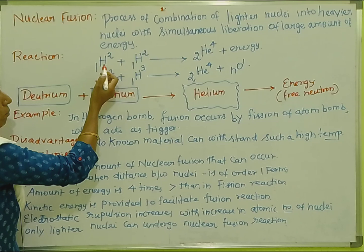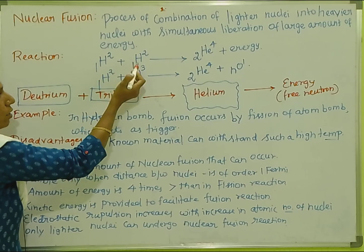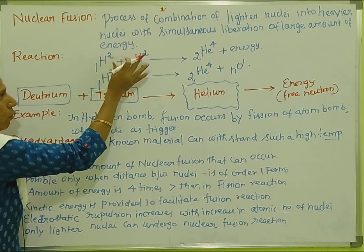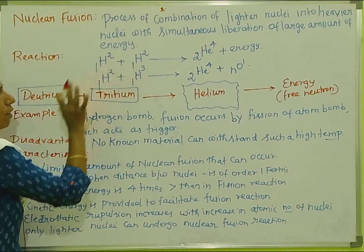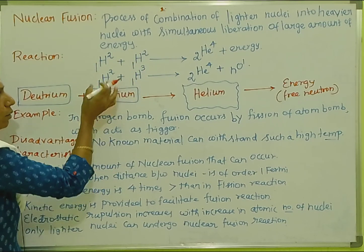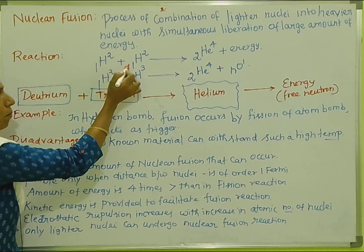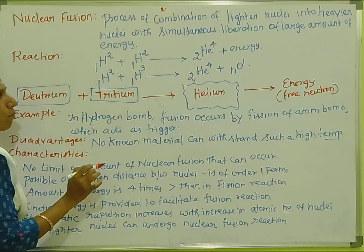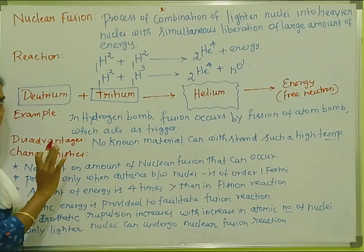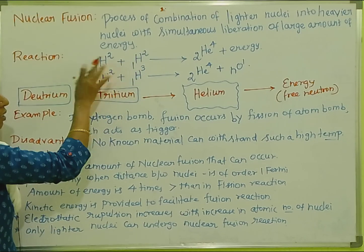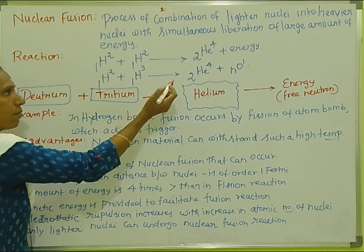So we will talk about hydrogen — lighter nuclei. Here we have two lighter nuclei: 1H2 plus 1H2. These are two lighter nuclei combining together.